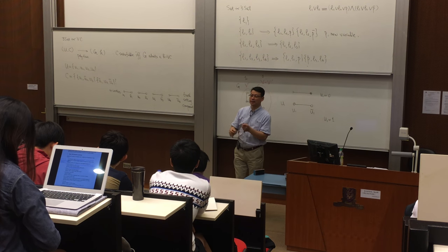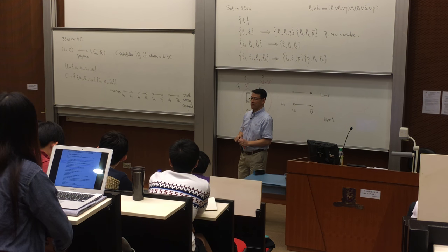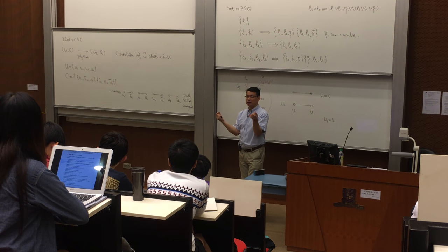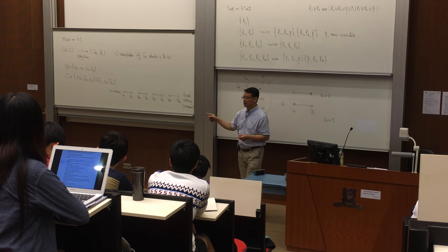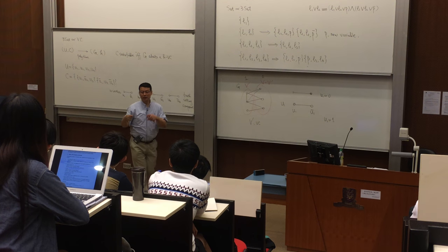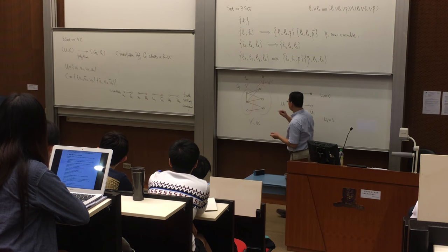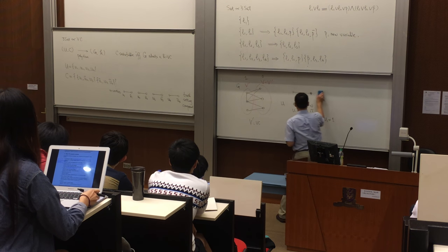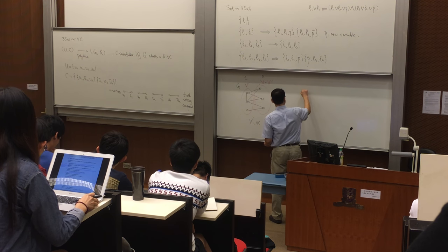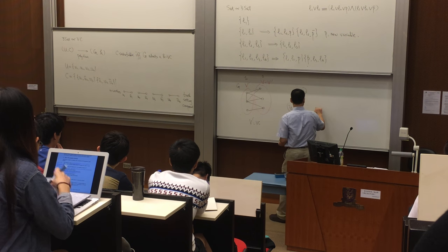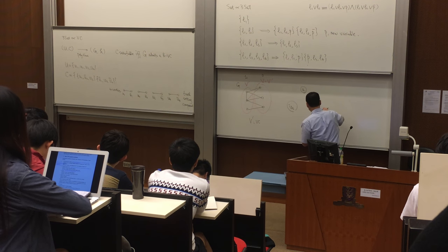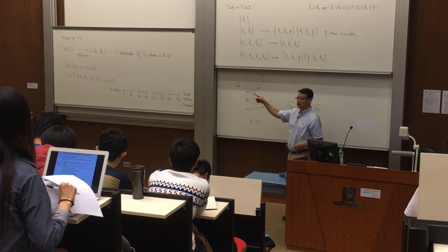Now for a clause — how can I represent that a clause is satisfied? A clause contains three literals, so I will use three vertices to represent a clause. For example: U1, U2-bar, U4 — so that's U3 here. I use three vertices to represent these three literals in the clause.